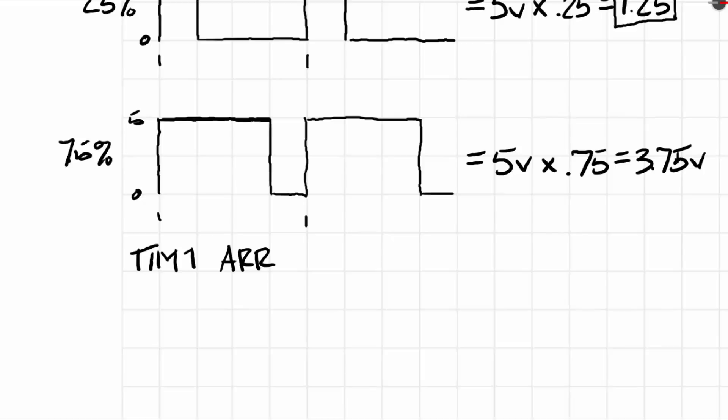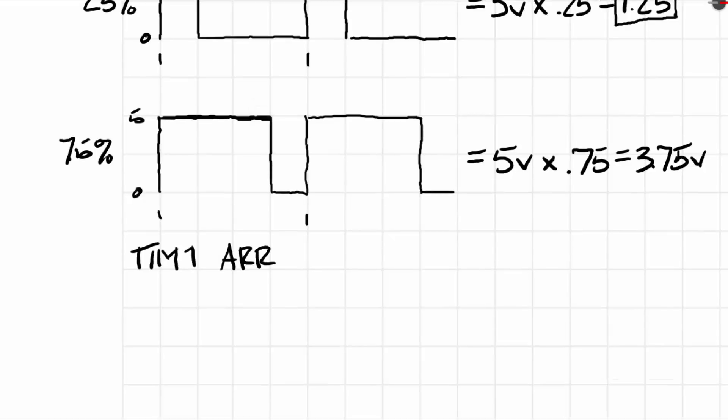That was the one we can specify the maximum number of counts before it went back to 0 count. Like when it was in the up counting, it would go from 0 to the ARR value and then back to 0, and start right all over again. It would look like this: counting up to a particular point and then it would stop and start all over again. Counting up, go back down. Counting up and going back down.